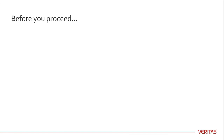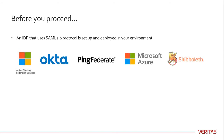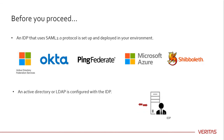Before you proceed, ensure the following. An identity provider is set up and deployed in your environment. Single Sign-On will work with any identity provider that uses the SAML 2.0 protocol such as ADFS, Okta, PingFederate, Microsoft Azure, Shibboleth, and so on. Ensure that the IDP is configured to authenticate domain users of Active Directory or Lightweight Directory Access Protocol.